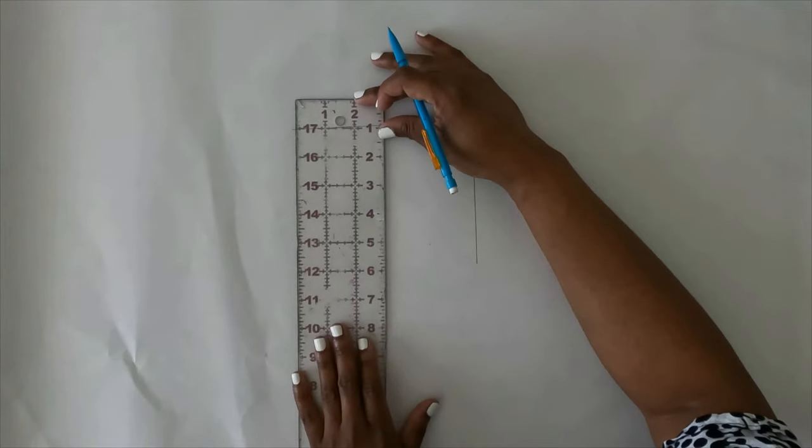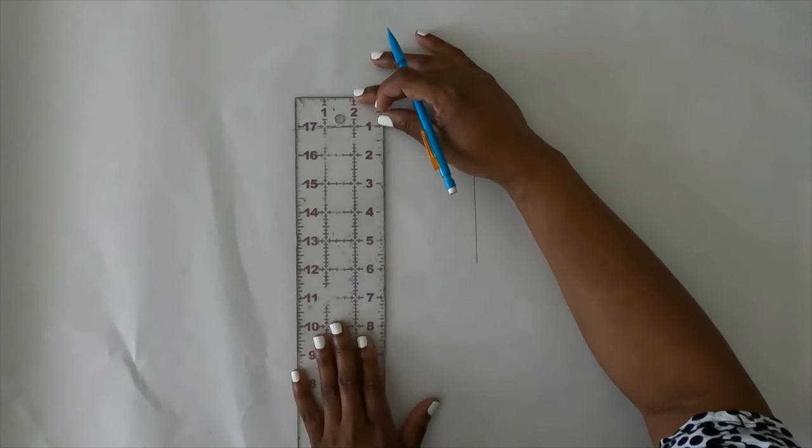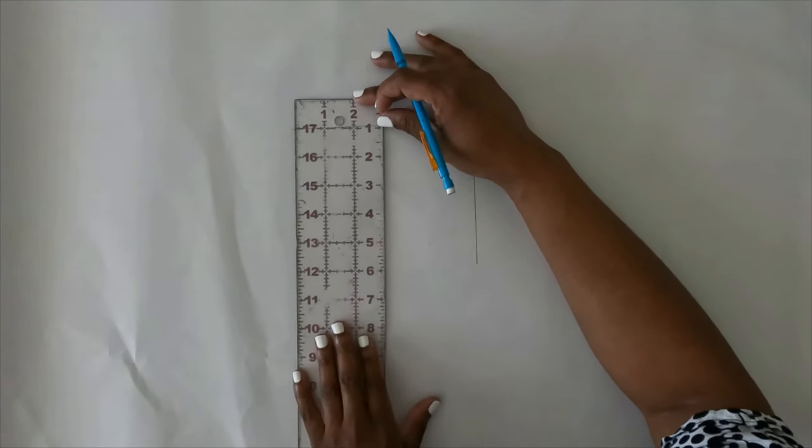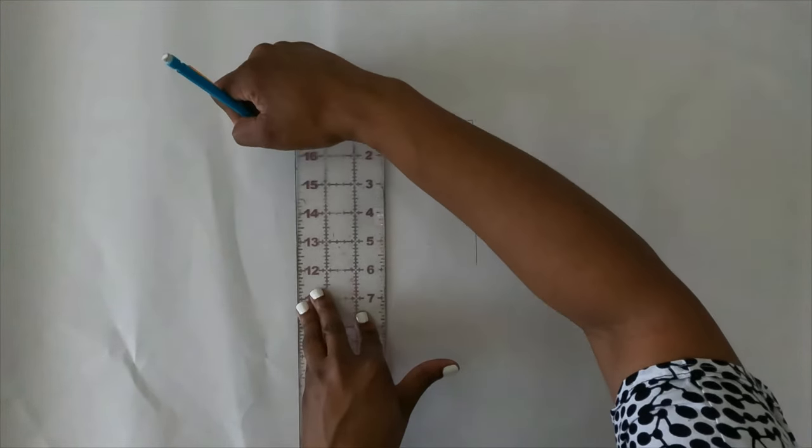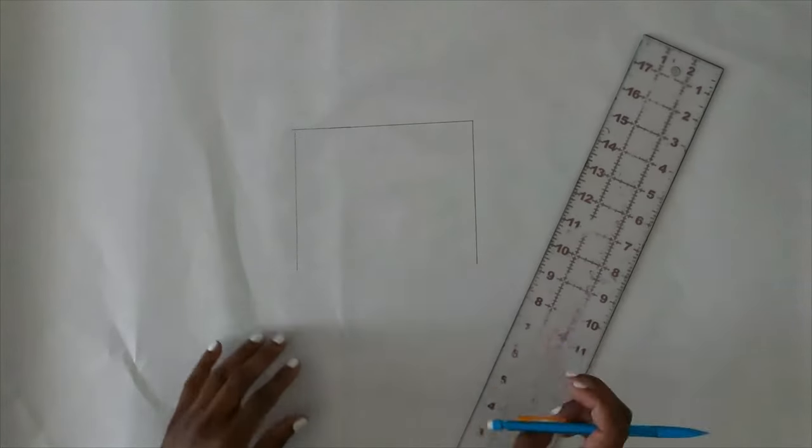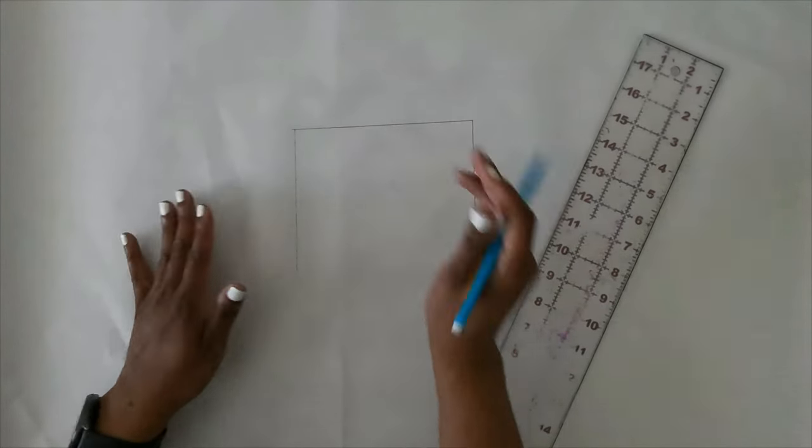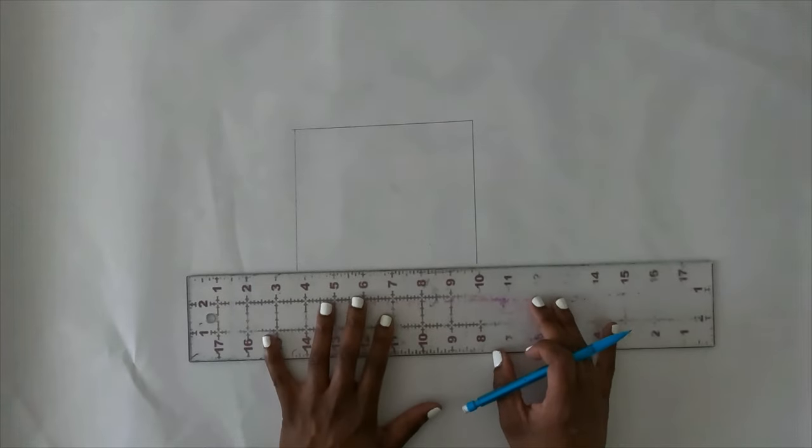So I want to do the same thing on the other side. Make sure that your lines are matching up. So I want to do five inches up and down and then I'm just going to close out my box.